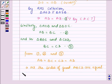And thus quadrilateral ABCD is a rhombus.